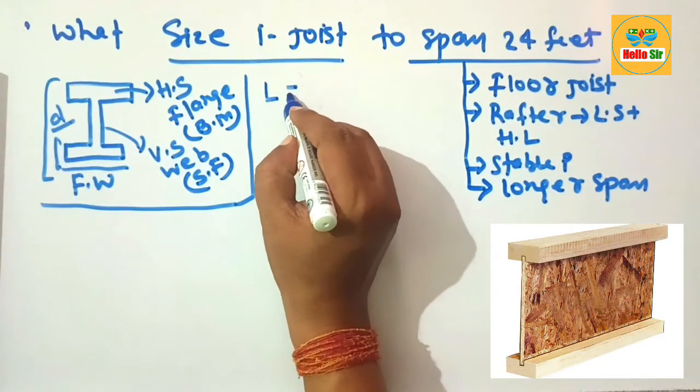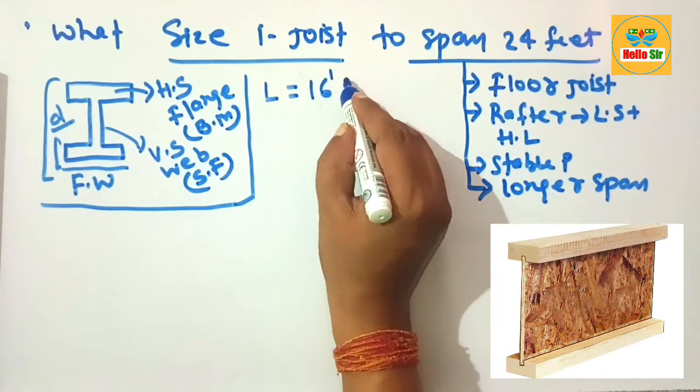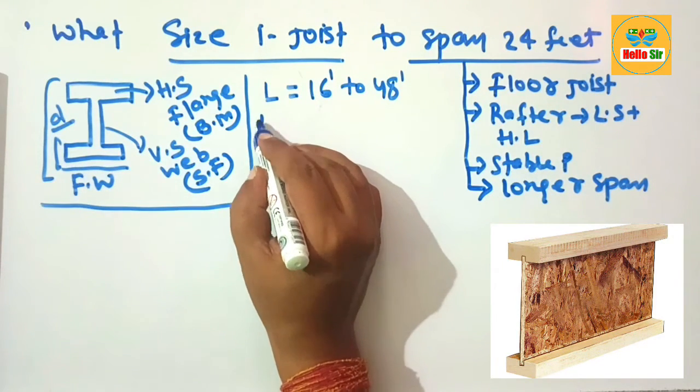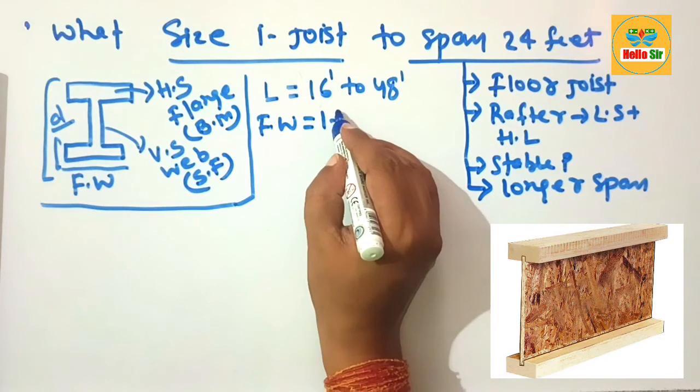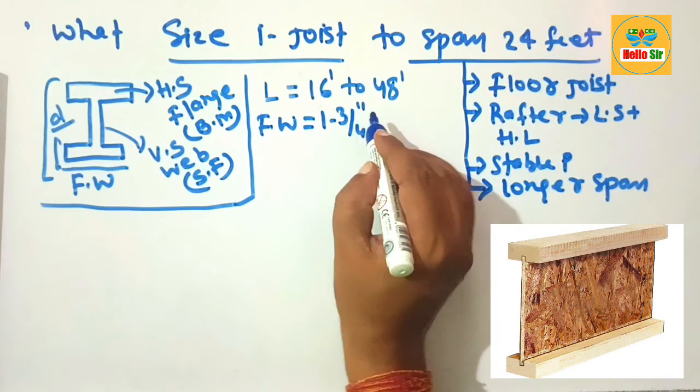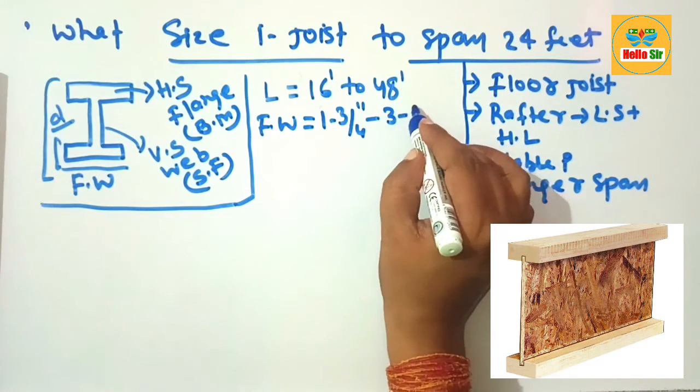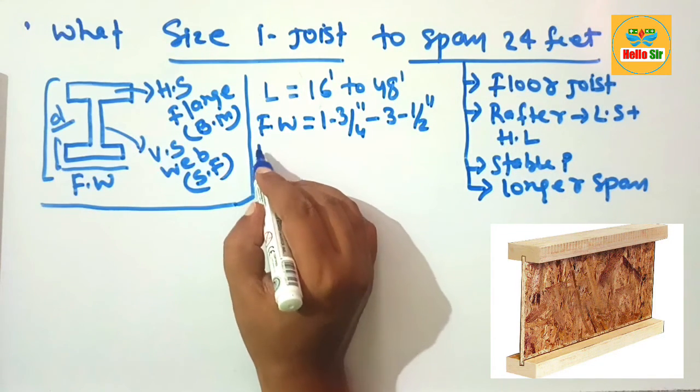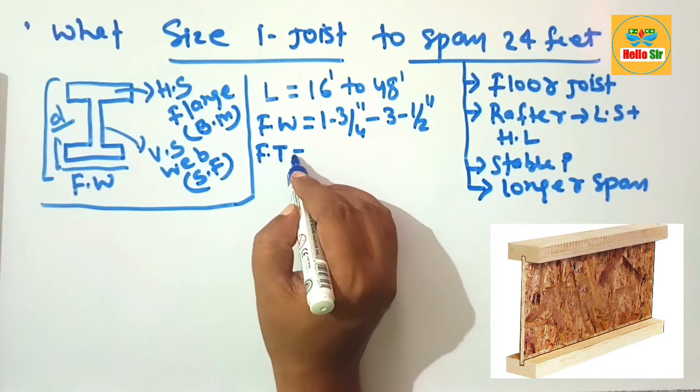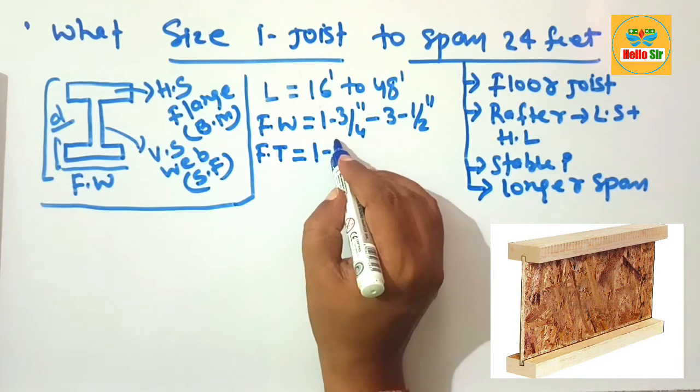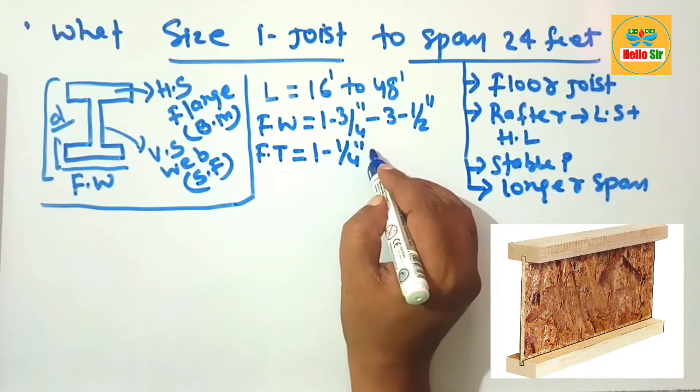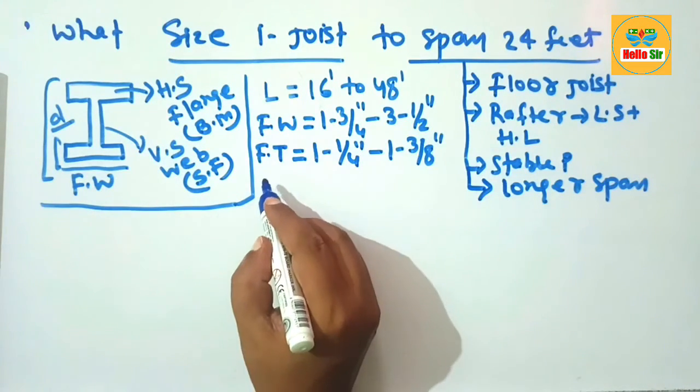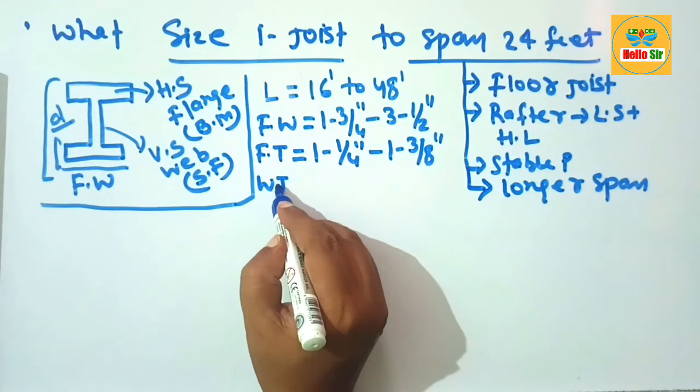The length of I-joists ranges between 16 feet to 48 feet, and the flange width is about 1 3/4 inches to 3 1/2 inches. The flange thickness can be 1 1/4 inches to 1 3/8 inches.